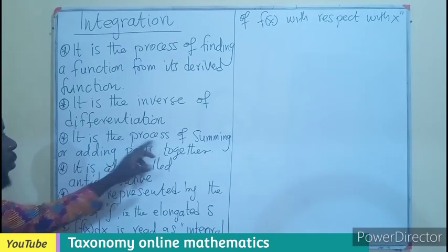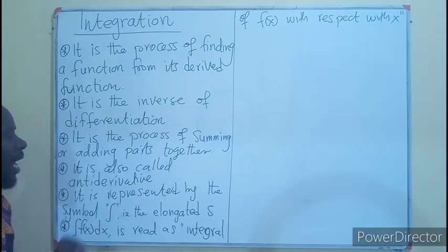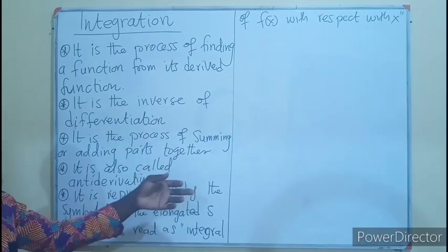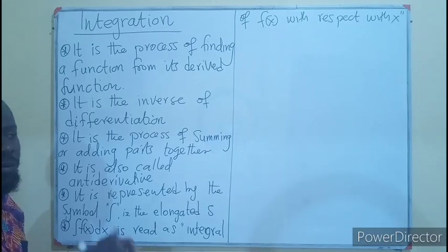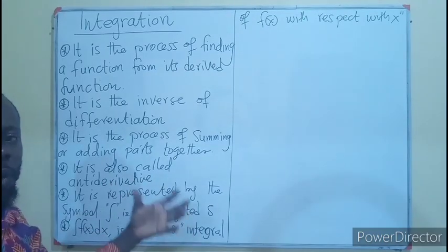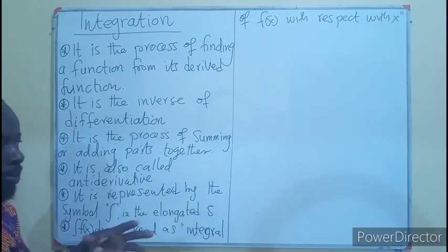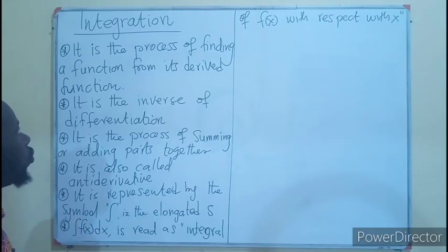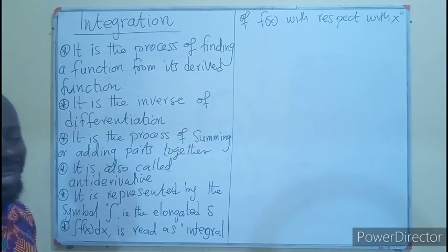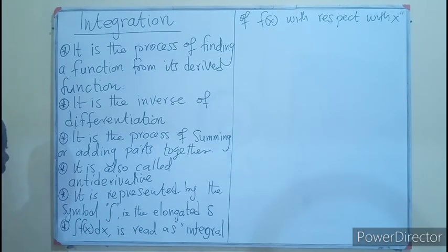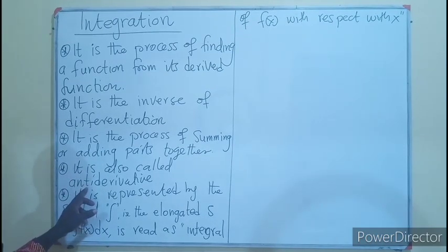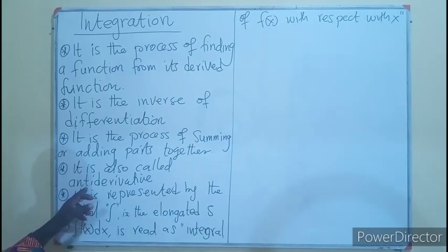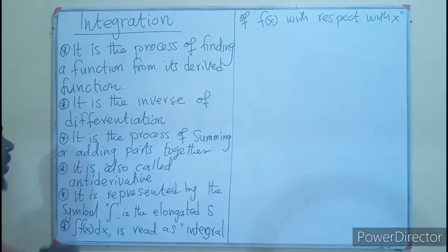Integration is also the process of summing or adding up parts together to become a whole. If we have parts of a function and we group them or add them up to become a whole, we are also doing what we call integration. We can also say it is called the anti-derivative. Derivative means differentiation, so the anti-derivative will also give us the definition for integration.